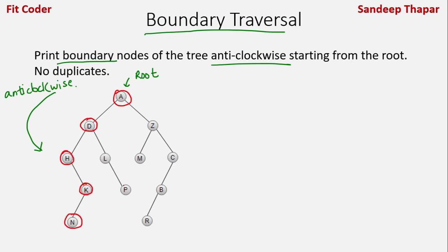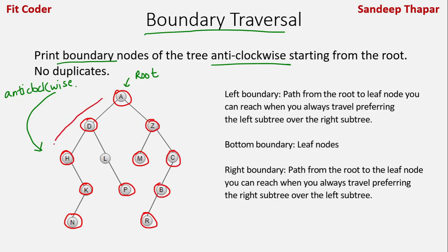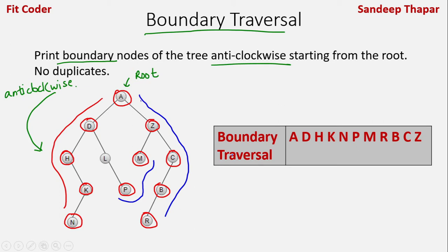The left boundary, the right boundary, and the bottom boundary together give us the boundary traversal. The boundary traversal consists of the nodes highlighted in red, and we have to make sure there are no duplicate nodes.